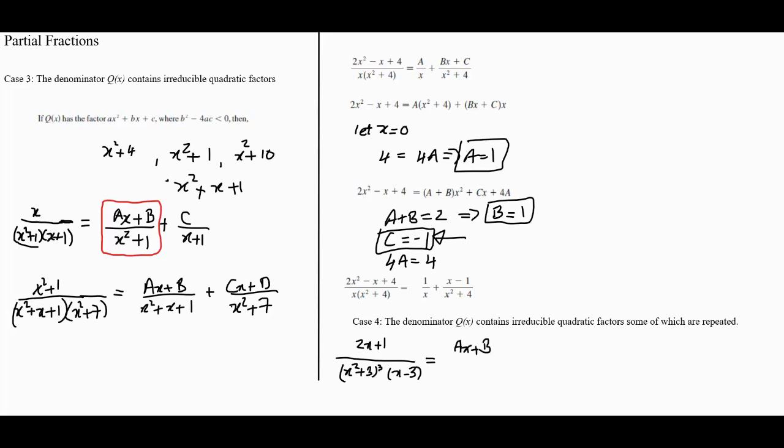We would have (Ax + B)/(x² + 3), then (Cx + D)/(x² + 3)², then (Ex + F)/(x² + 3)³, and finally G/(x - 3). That's basically how we would split those partial fractions. There you can see the repeated irreducible quadratic x² + 3 cubed.